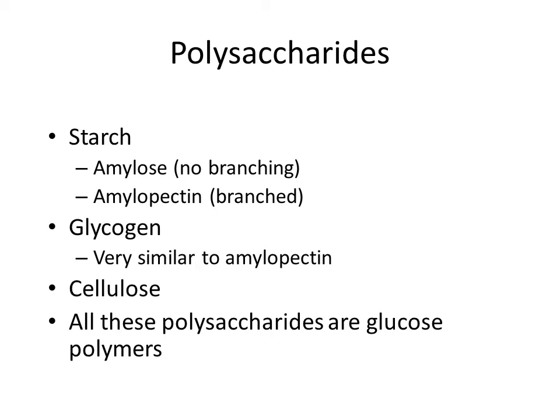Examples of polysaccharides include plant starches: amylose and amylopectin are two types. Amylose starch has a straight chain of glucose with no branching, while amylopectin is a glucose polysaccharide that has branches. Glycogen is an animal starch and its structure is very similar to amylopectin.